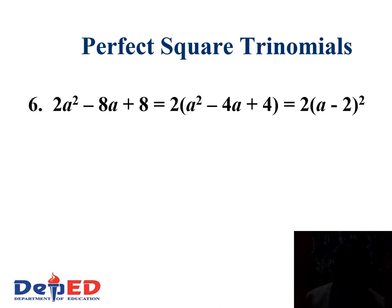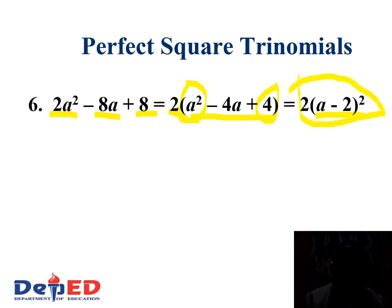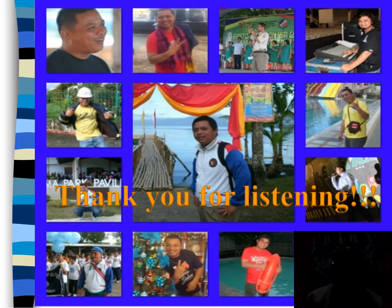Another example: we have 2a² minus 8a plus 8. The GCF is 2, so factor out 2. We have now a² minus 4a plus 4. Since 4 is a perfect square and a² is a perfect square, we have (a minus 2). So the final answer is 2 times the quantity of (a minus 2) squared. Thank you for listening.